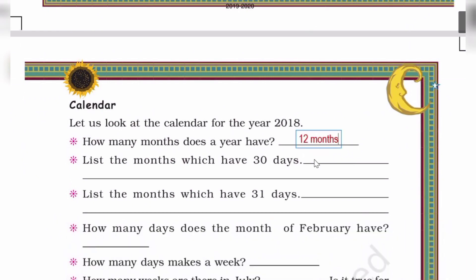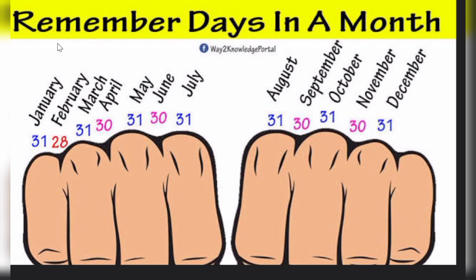So write 12 months. Now next, list the months which have 30 days and list the months which have 31 days. Here is an easy trick to remember days in a month. January 31 days, February 28 days. In leap year, February has 29 days. March 31, April 30, May 31, June 30, July 31, August 31, September 30, October 31, November 30, December 31.